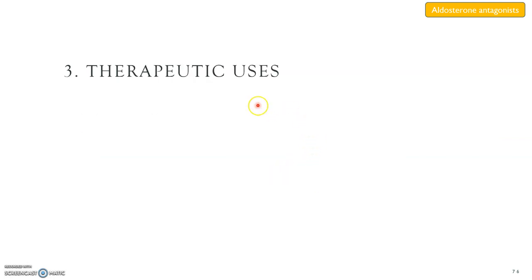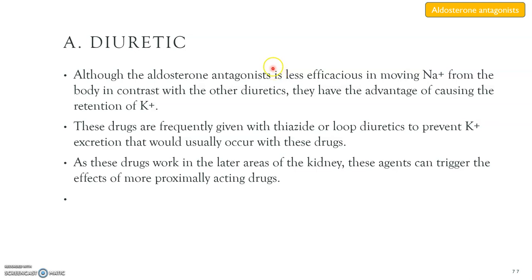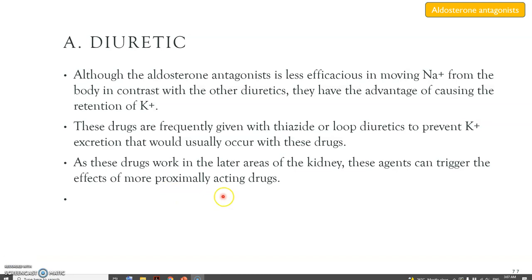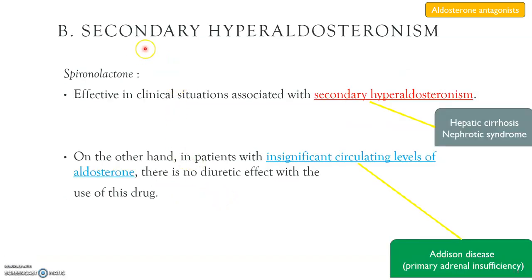The first therapeutic use is as a diuretic. Although the aldosterone blockers are less effective at removing sodium from the body compared with other diuretics, they have the advantage of causing retention of potassium. These drugs are usually given together with thiazide or loop diuretics to prevent the potassium excretion that would normally occur with those drugs. As a diuretic, spironolactone is also used in secondary hyperaldosteronism.